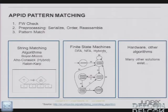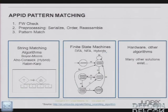In terms of how App ID does pattern matching, there are different algorithms — a lot of them are the same techniques used in traditional IPS products and layer seven services like URL filtering and AV. What typically has to happen is first the firewall will permit the traffic, there's some pre-processing, and then we do the pattern matching. There are different string matching algorithms like Boyer-Moore, Aho-Corasick, and Rabin-Karp. There's DFA-based state machine matching, and of course hardware is being leveraged more and more to actually do the pattern matching.